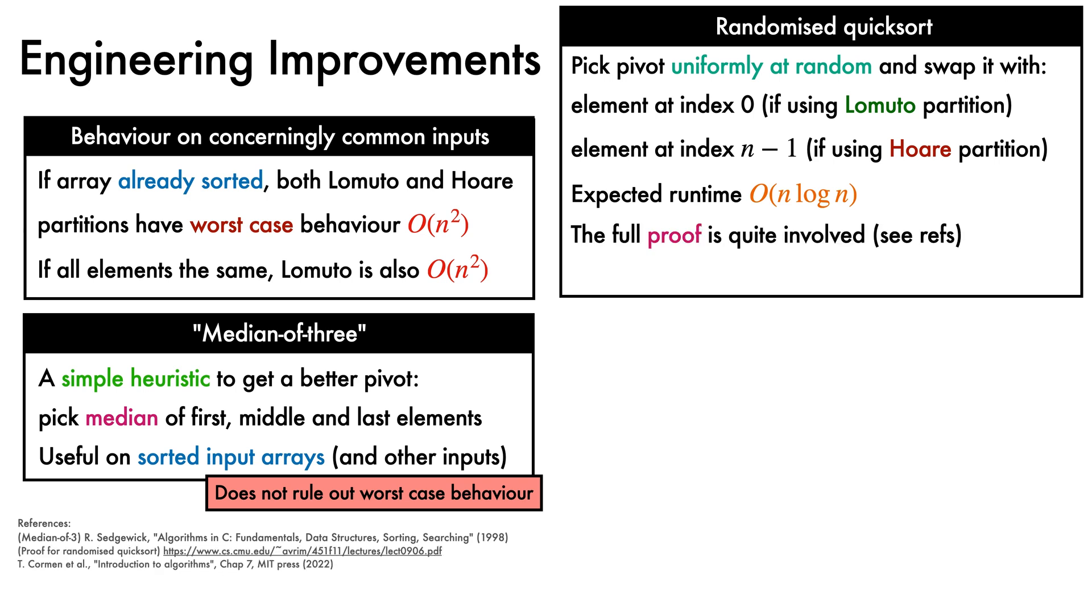The proof is somewhat involved, so we won't go through it here, but I've added references if you'd like to find out more. Randomisation is widely used in practice, because the worst case becomes very unlikely to occur.